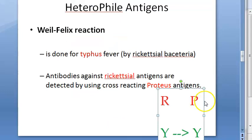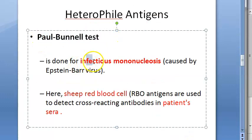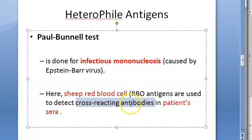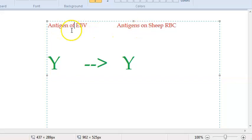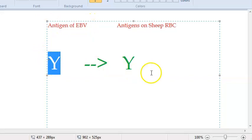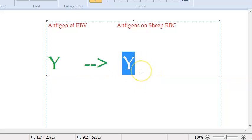The Paul-Bunnell test is done for infectious mononucleosis, which is caused by Epstein-Barr virus, a DNA virus. A person with EBV infection has the antigen of Epstein-Barr virus, and his body makes antibodies against it. You take his blood, get his serum — which contains antibodies to Epstein-Barr virus — and you are going to detect these antibodies.